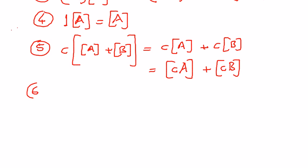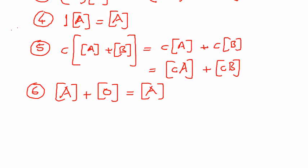The next property: if A is a matrix with some elements, and we have another matrix which has zero elements — a null or zero matrix — and if we add these two matrices, it is not going to change the elements in matrix A, because all elements in the zero matrix are zero. Just as adding zero to any number, like five plus zero equals five, does not change its value.